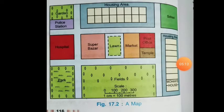Now, components of maps. All maps have three main components, namely direction, distance, and location. These three components — directions, distance, and location — are illustrated here with regard to Mohan's house, as you can see in the picture.